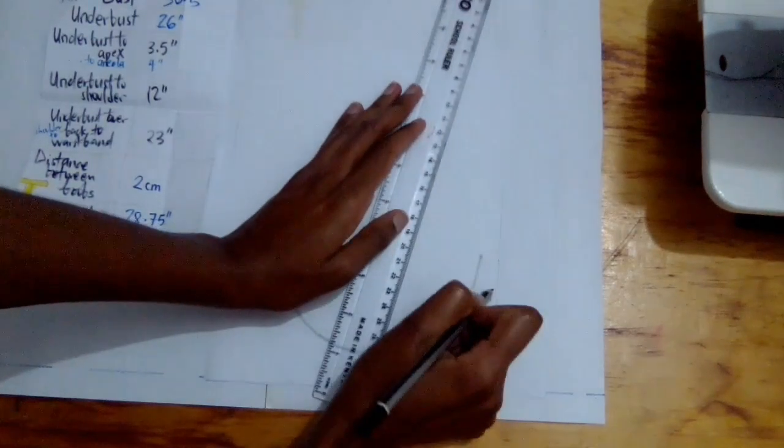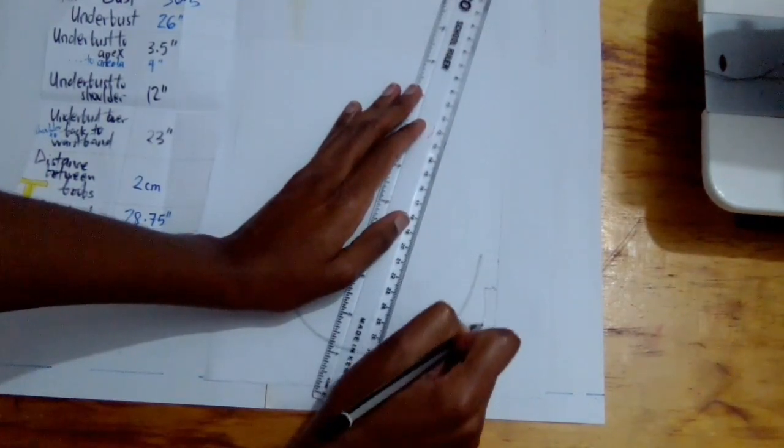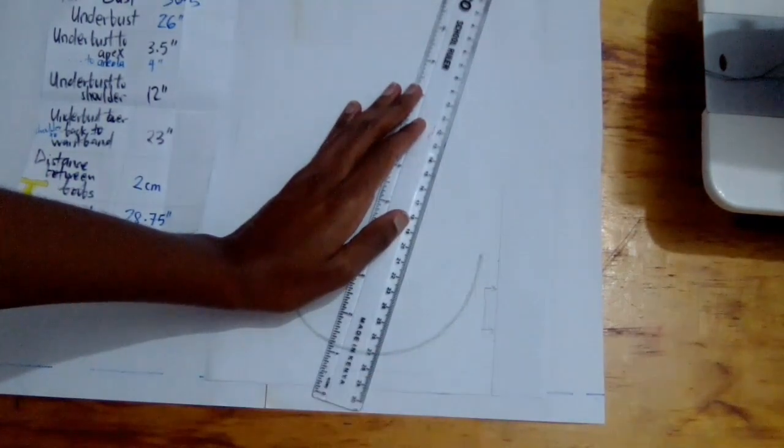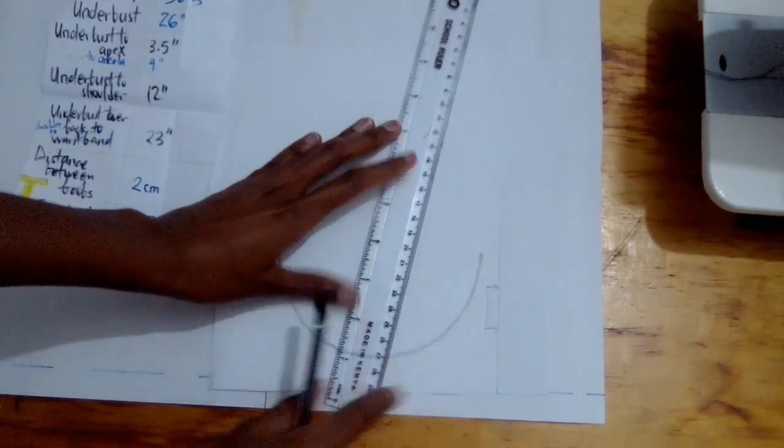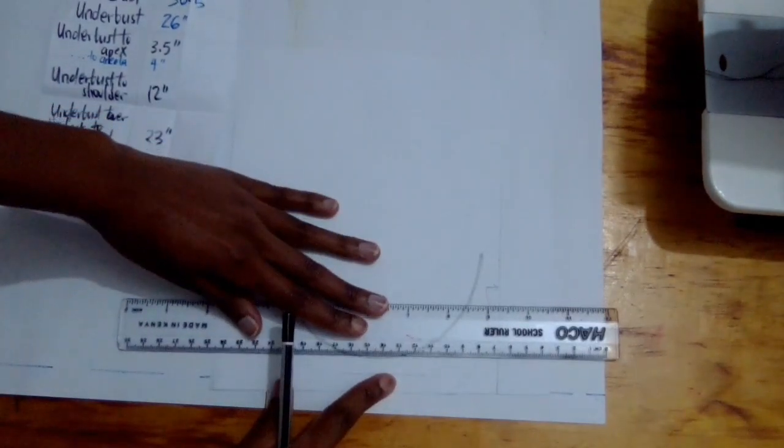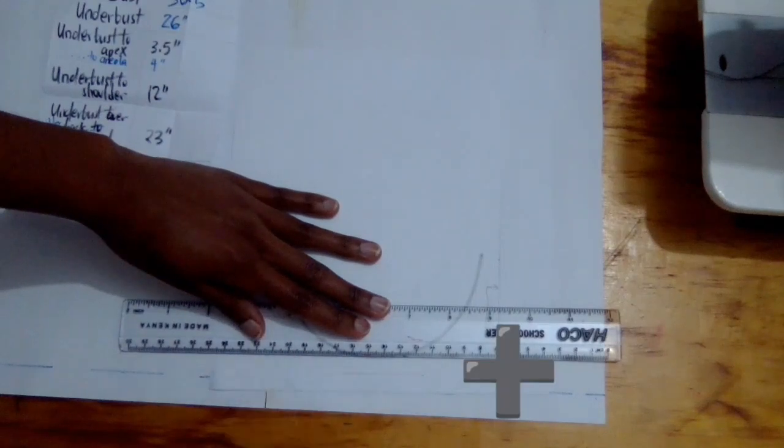The line is perpendicular. This is going to be my center front. Now I'm going to draw a line just touching the underwire line.